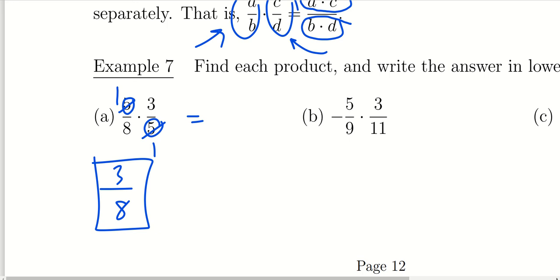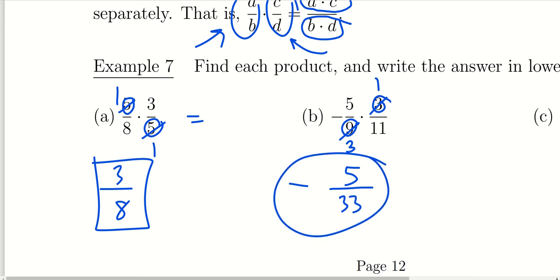For example B, we're multiplying a negative times a positive, so the final answer is negative. There is also a common factor of 3 in a numerator term and a denominator term — 3 goes into itself once, and 3 goes into 9 three times. There's no more reducing we can do since 5 has no matching factors in the denominator. Multiplying tops and bottoms: 5 times 1 is 5, and 3 times 11 is 33. The final answer is negative 5 over 33.